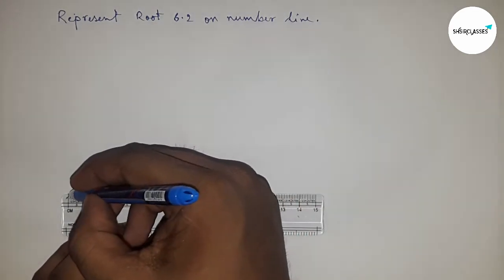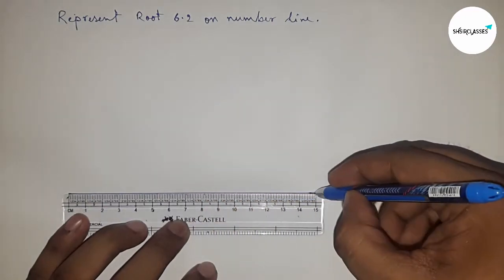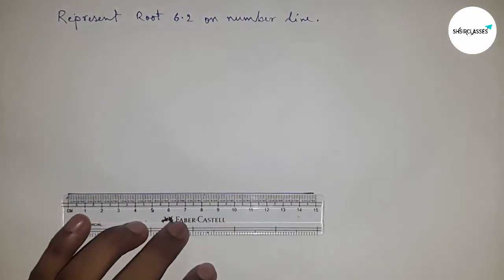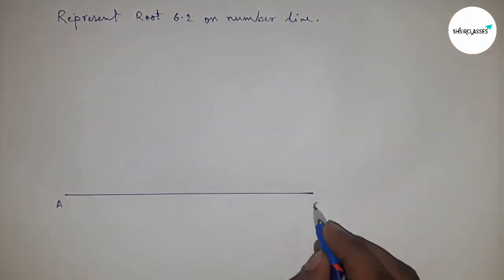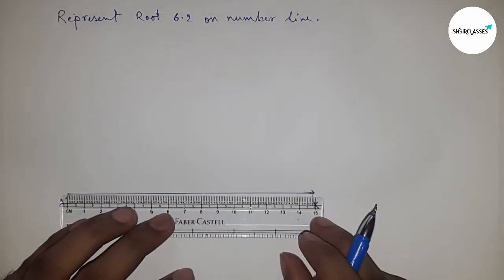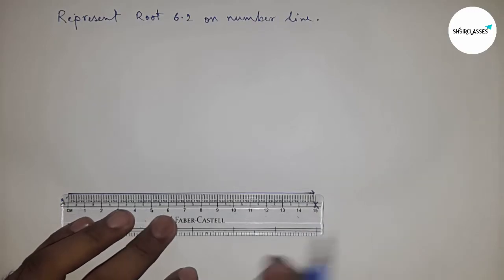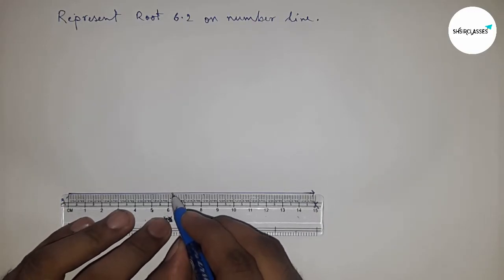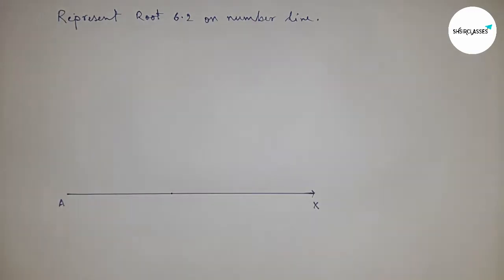Okay, so first of all drawing a line of any length here, and this is AX line. Next, taking a length 6.2 by scale, so this is 6.2 on the line AX, and this is B point.